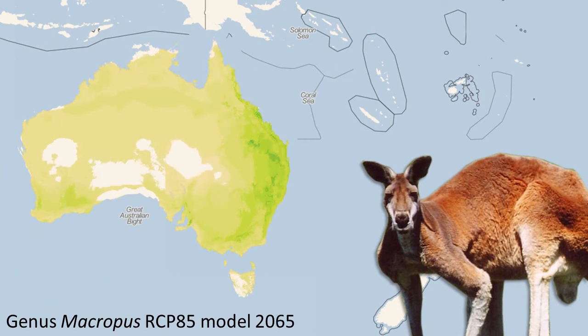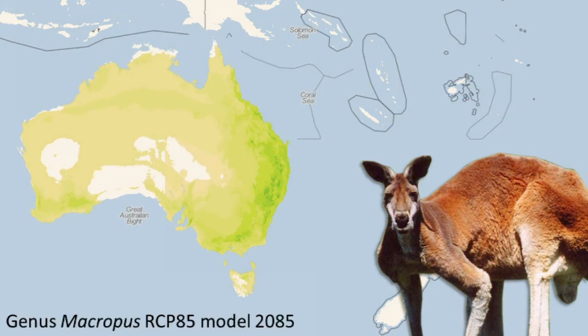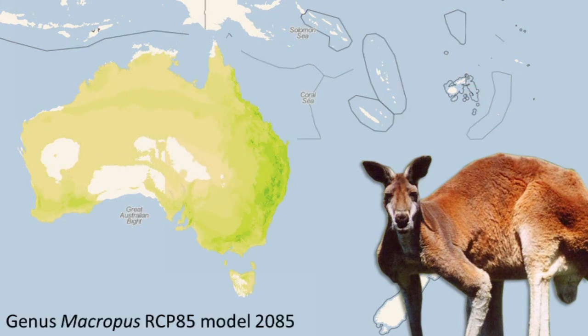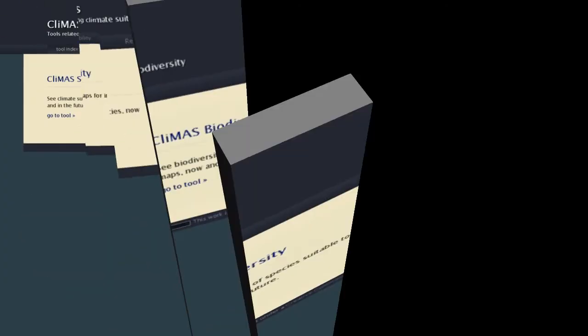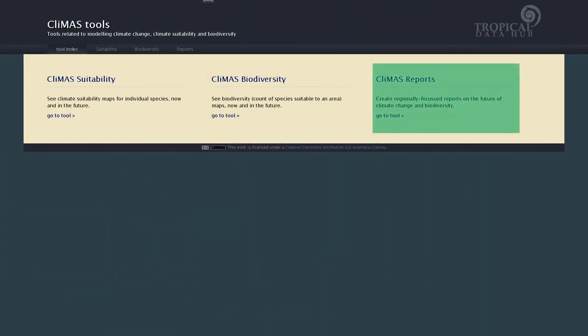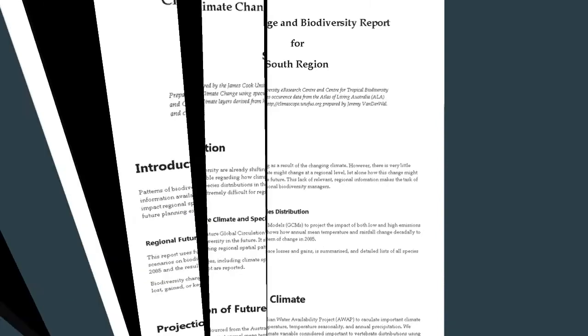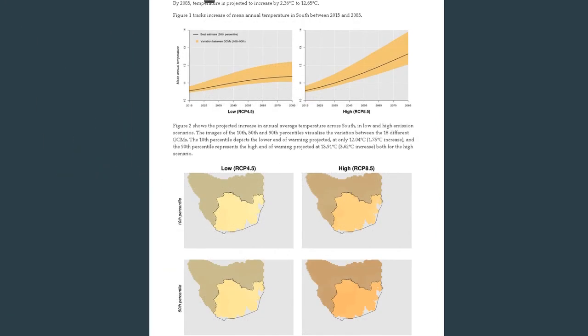Like the suitability tool, it allows users to explore these interactions under a variety of climate change scenarios. The final reporting tool allows users to generate climate reports for their region for a given year under low and high estimates of climate change.